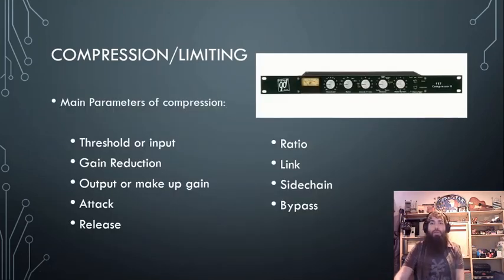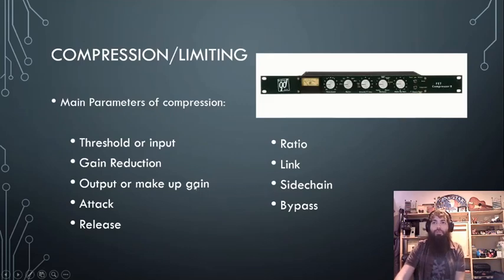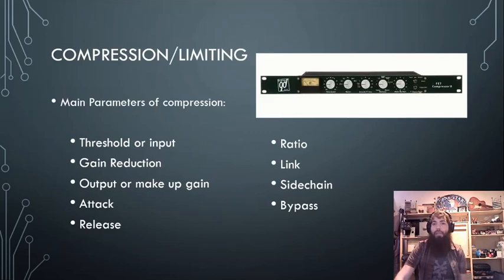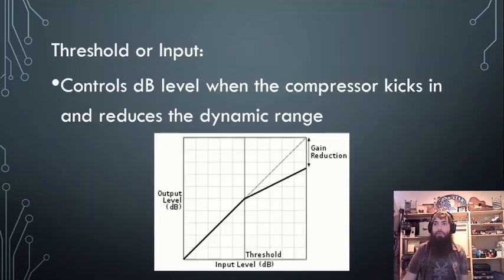A compressor or limiter is going to have these main parameter choices: threshold or input, gain reduction, output or makeup gain, attack, release, ratio, link, side chain, and bypass. Let's go over each of those individually.